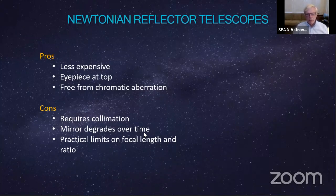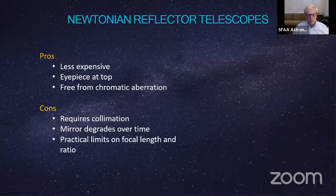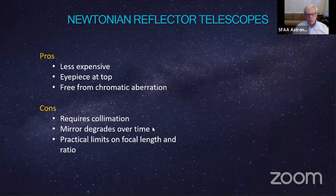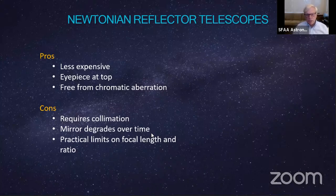There are practical limits on focal length and focal ratio for the Newtonian, because the focal length equals the length of the tube. You tend to see shorter focal ratios with larger reflectors because of the tube length issue — a longer tube becomes awkward to handle.